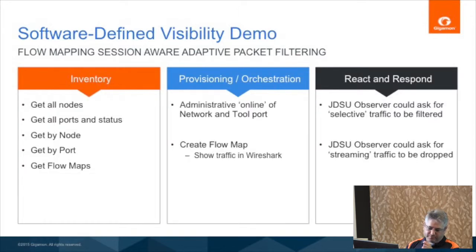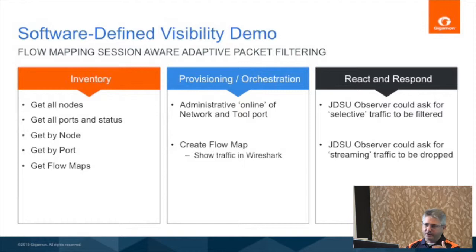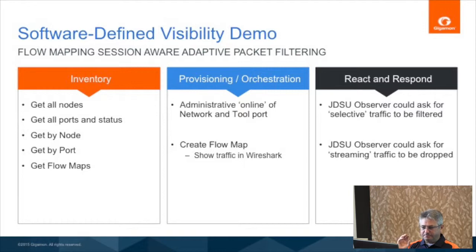We're going to do a couple things. First, after logging in, we'll get an inventory from FM directly through REST of all the 10 or 12 nodes in FM. FM will report back on every node it's aware of. Then we'll get a specific test node, run a quick inventory to see what maps are in it, modify one of the ports to be a tool port, and then push a map. Once I push this pass-all map, we'll start seeing actual traffic running between KolaSoft and Wireshark. Then I'll push another map — one that includes session-aware adaptive packet filtering.